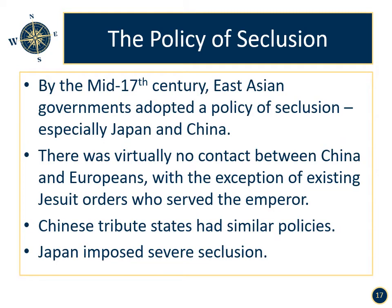The policy of seclusion. By the mid-17th century, East Asian governments adopted a policy of seclusion, especially Japan and China. There was virtually no contact between China and Europeans, with the exception of existing Jesuit orders who served the Emperor. Chinese tribute states had similar policies. Japan imposed severe seclusion — Japanese were not allowed to leave Japan, and if they did and returned, they would face death. Eventually Japan would become an imperial power within Asia, just as the Europeans.